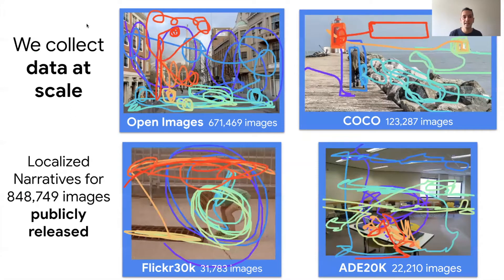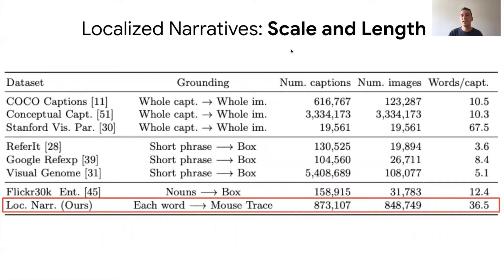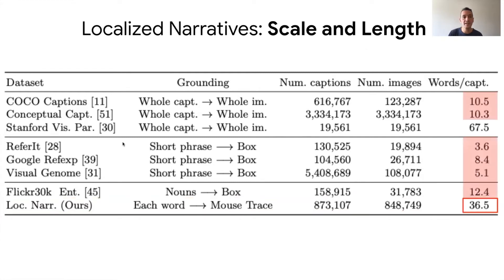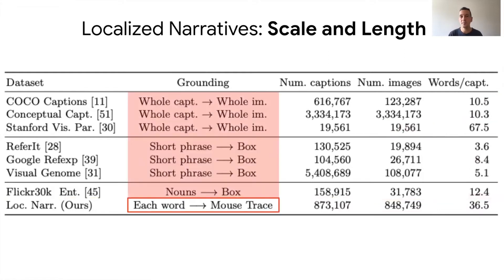At Google, we collected this data at scale. We released data for about 849,000 localized narrative images, annotating a large portion of Open Images, all of the COCO dataset, all of Flickr 30k, and all of ADE 20k. The localized narrative captions are on average three times longer than previous popular datasets such as COCO captions, Visual Genome, and Flickr 30k, with 37 words per caption — very rich. The only exception is the Stanford Visual Paragraph dataset, but we have 40 times more images annotated. Most importantly, localized narratives is the first work to provide grounding for every single word in the caption, in the form of a mouse trace.